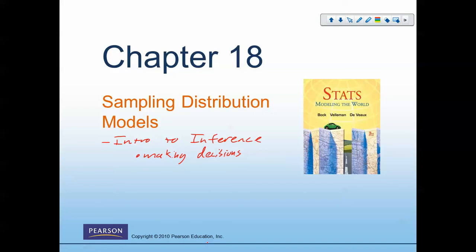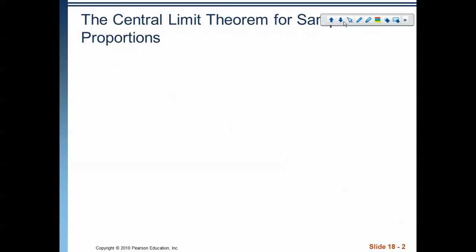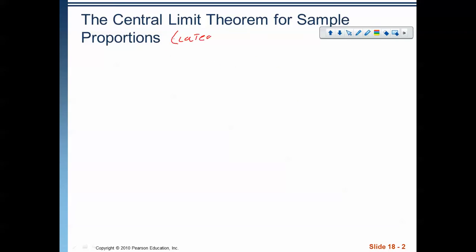Let's get started talking about what a sampling distribution model is. We have the central limit theorem. For sample proportions — which is for categorical data, like percents — we also apply it for quantitative data, which would be for means. When I say proportions, we should be thinking categorical data.